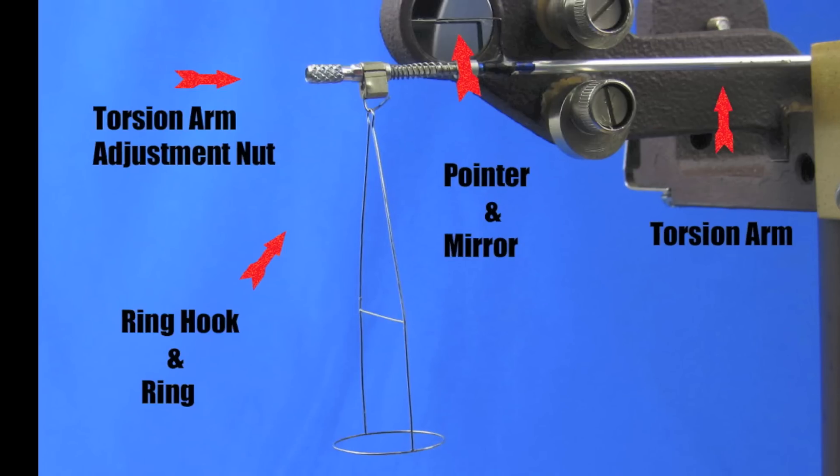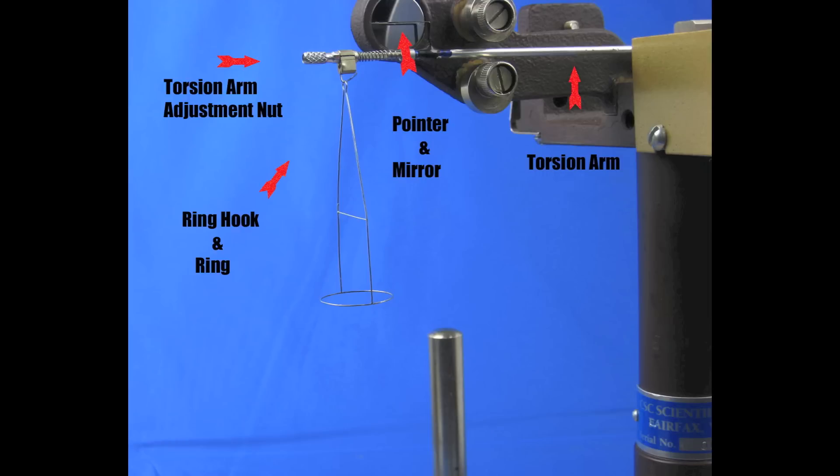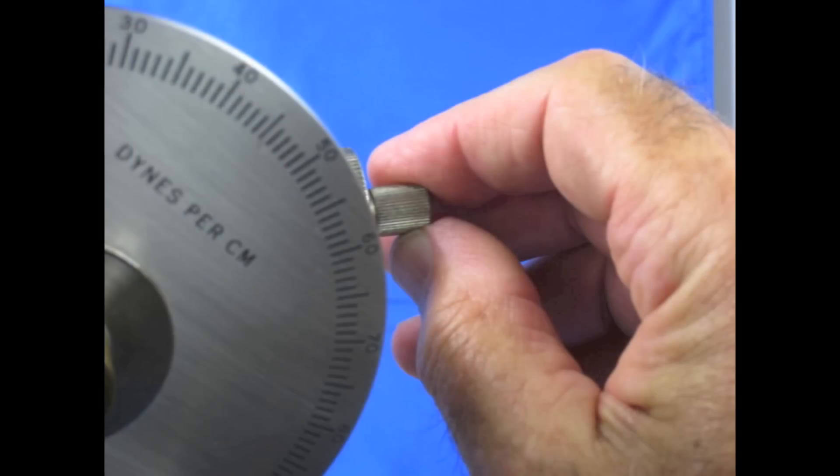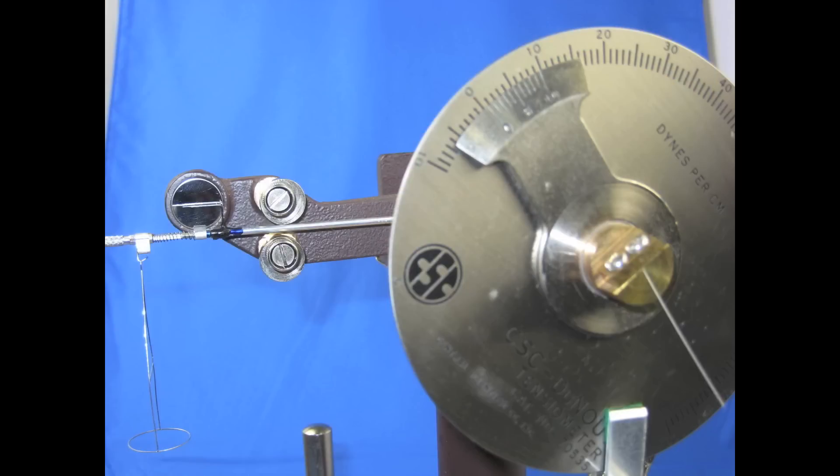The next step is to move the arm pointer back to the line by turning the adjustment knob clockwise until the arm pointer lines up with the mirror line. Next, loosen the dial clamp and turn the dial until the dial zero line matches the zero line on the vernier.